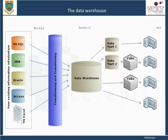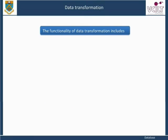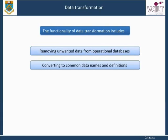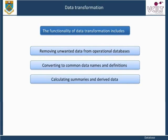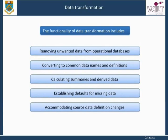The central data warehouse database is a cornerstone of the data warehousing environment. This type of database is mostly implemented using a relational DBMS. The functionality of data transformation includes removing unwanted data from operational databases, converting to common data names and definitions, calculating summaries and derived data, establishing defaults for missing data, and accommodating source data definition changes.